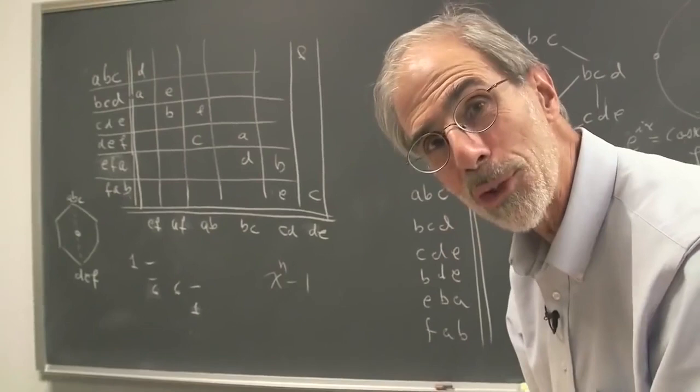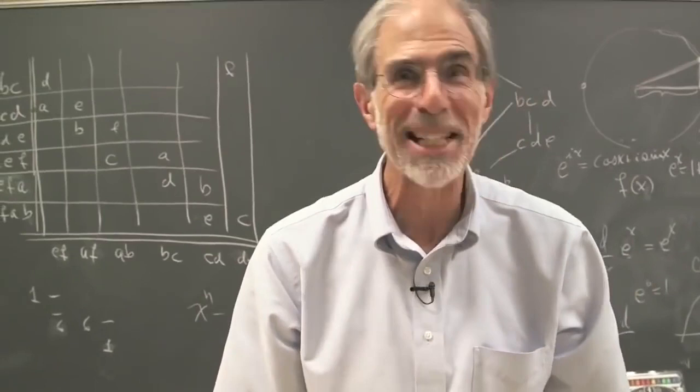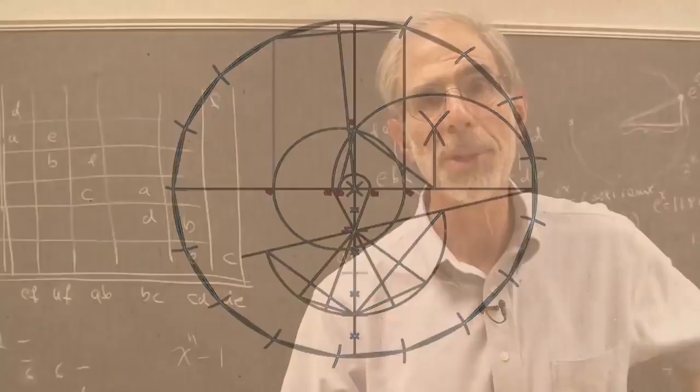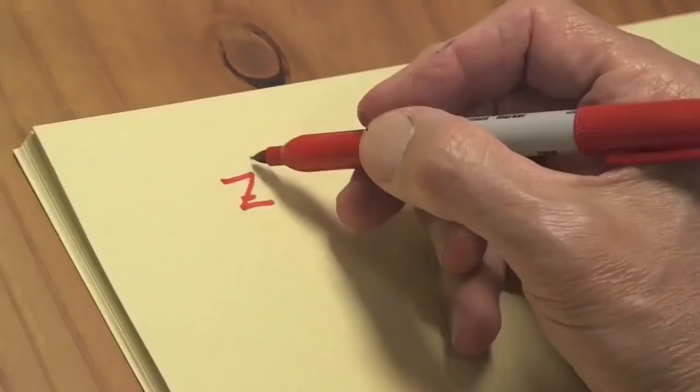So that's what Gauss knew would work and what does work, at least in principle, if not with a real ruler and compass. Was the 17 gone his aim? Was that his end game? Or was that like a byproduct? I think it was a byproduct of his study of the roots of the equation z to the n minus 1. Gauss made a very deep study of these equations and what their roots look like and the complex numbers.